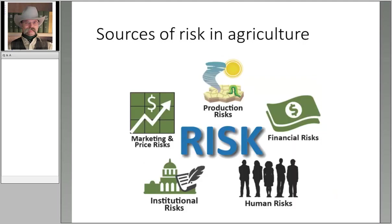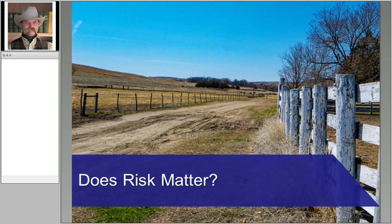When we turn to agriculture, we're probably all familiar with these five main sources of risk that we've been talking about for the last decade or more: anywhere from market and price risk to production risk, which we are most familiar with, and then institutional risk or legal risk as some have called it, human resource risk, and financial risk. In the interest of time, we'll move on now to the implications of those sources of risk for our business, addressed in the section titled: Does Risk Matter?